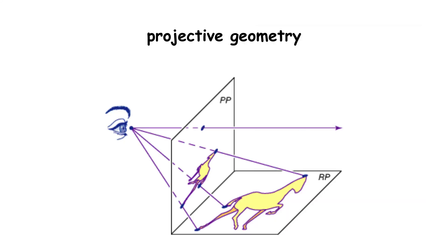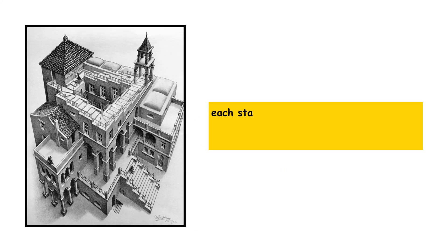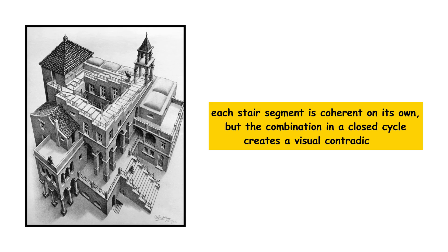The trick lies in the use of projective geometry. Each stair segment is coherent on its own, but the combination in a closed cycle creates a visual contradiction.